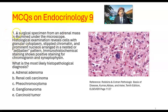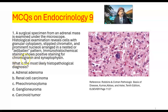Number one. A surgical specimen from an adrenal mass is examined under the microscope. Histological examination reveals cells with granular cytoplasm, stippled chromatin, and prominent nucleoli arranged in a nested or zellballen pattern. Immunohistochemical staining shows positive staining for chromogranin and synaptophysin. What is the most likely histopathological diagnosis?